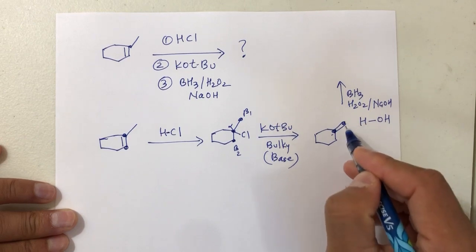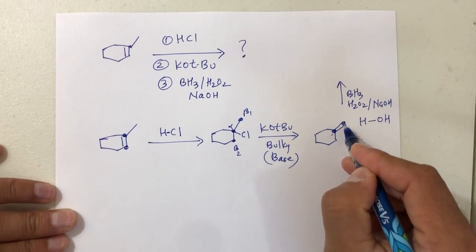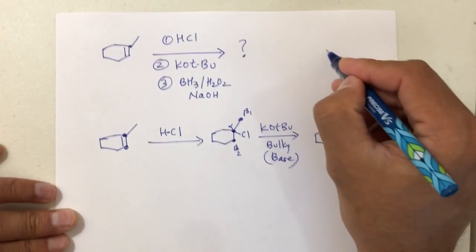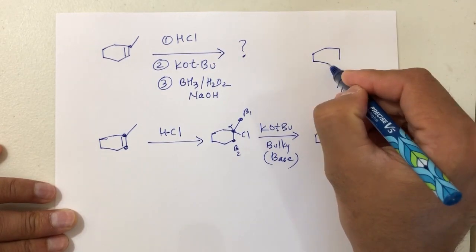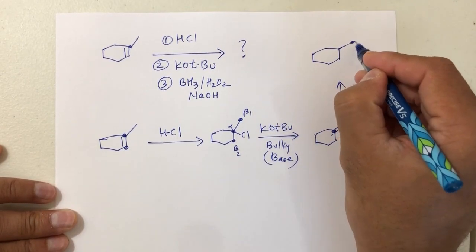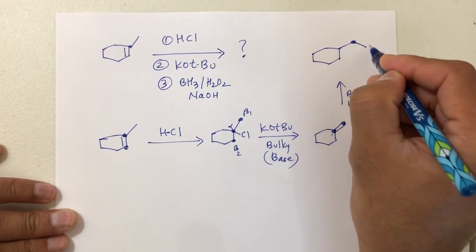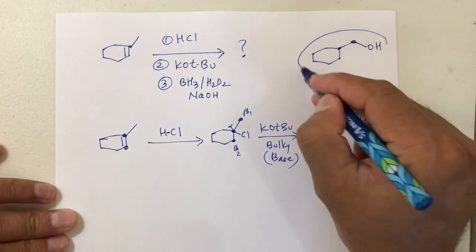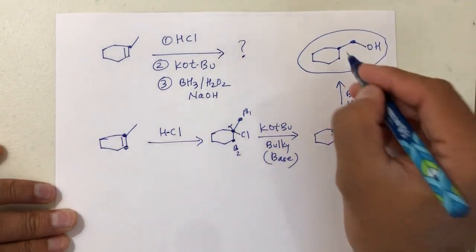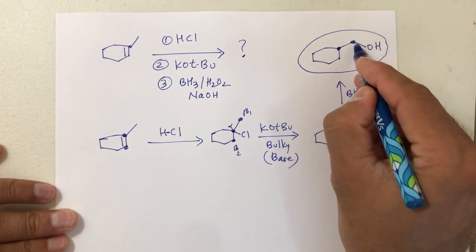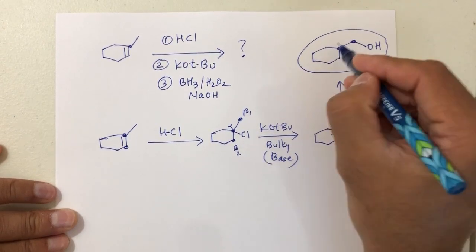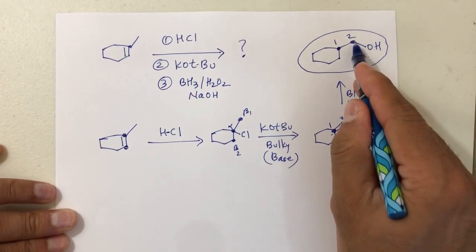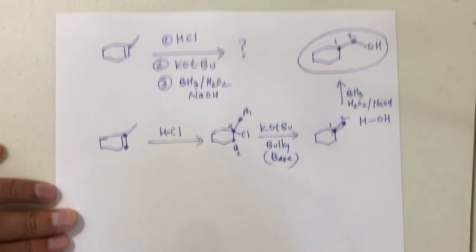According to Markovnikov's rule, H should go here and OH should go here. Since we are going anti-Markovnikov, OH will go on carbon 2 and H will go on carbon 1 — that should be your product.